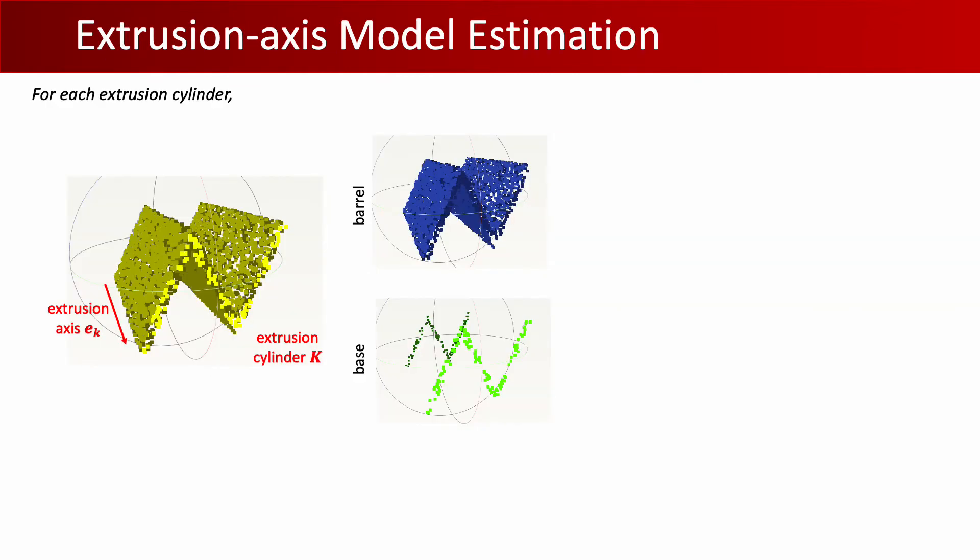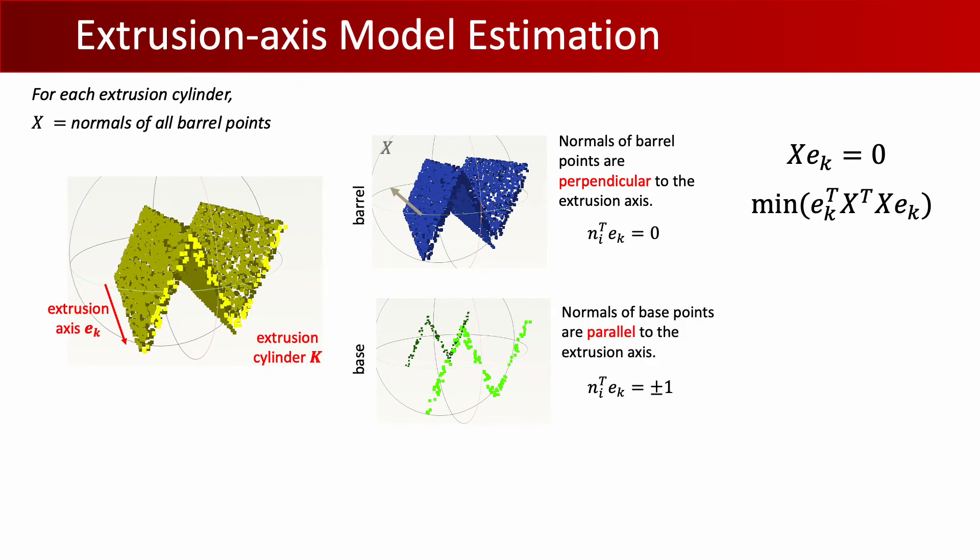In order to derive the extrusion axis from the predicted segmentation and normals for each extrusion cylinder, we make the following observations. The normals of the barrel points are perpendicular to the extrusion axis, which implies that we want to find e_k such that the dot product of all the normals corresponding to the barrel points and e_k is 0. Concatenating all such normals to a matrix X implies that X·e_k equals 0. This also implies that we want to minimize e_k^T·X^T·X·e_k.